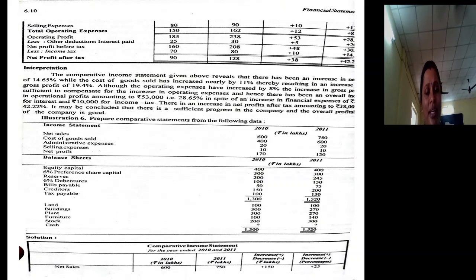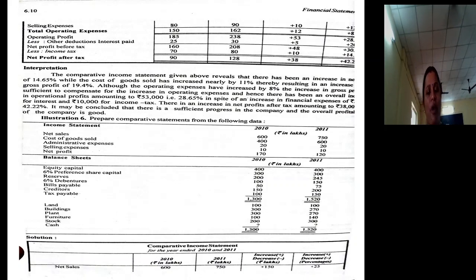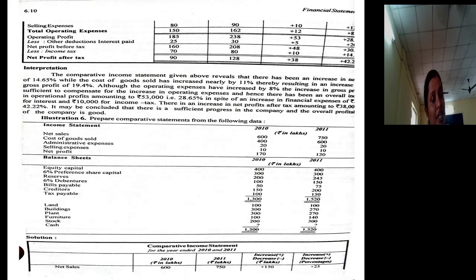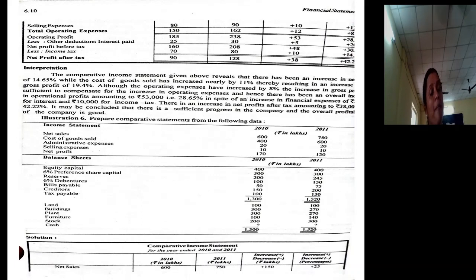Even though operating expenses increased, gross profit increased such that the increase in operating expenses was fully recovered. That is why operating profit increased by 28.65%. In spite of an increase in financial expenses like interest and income tax, there is an increase in net profit after tax amounting to 38,000 rupees, which in percentage terms is 42.22%. It may be concluded that there is sufficient progress in the company and the overall profitability of the company is good. This is how to interpret.